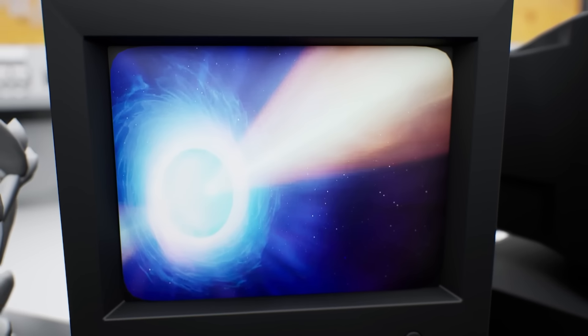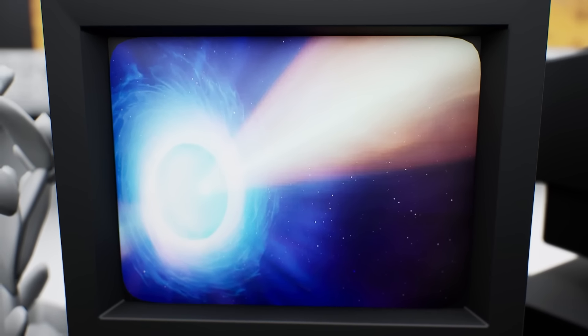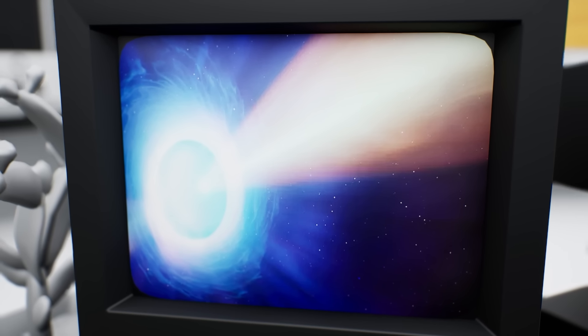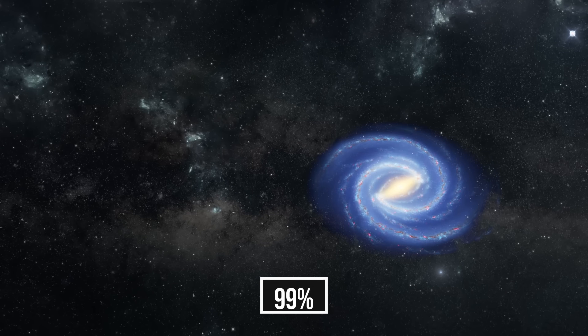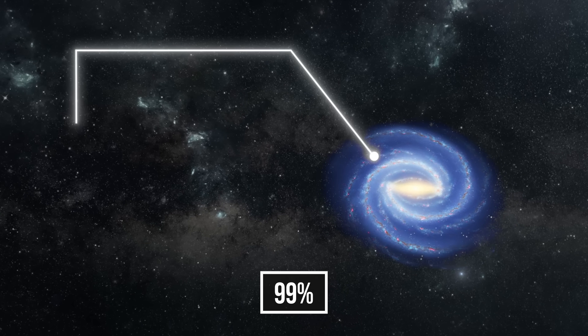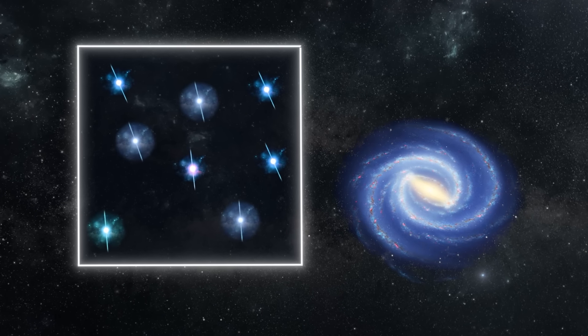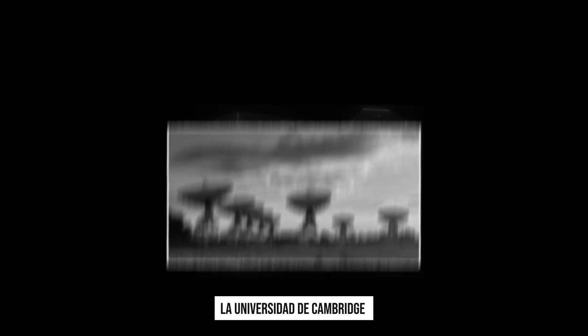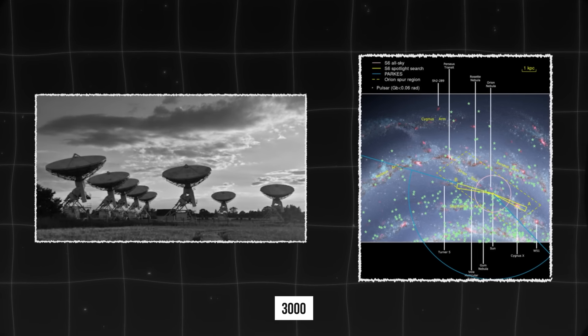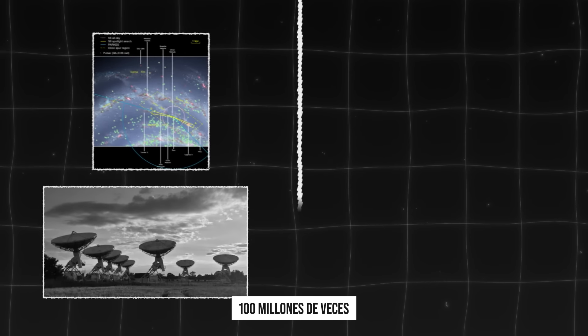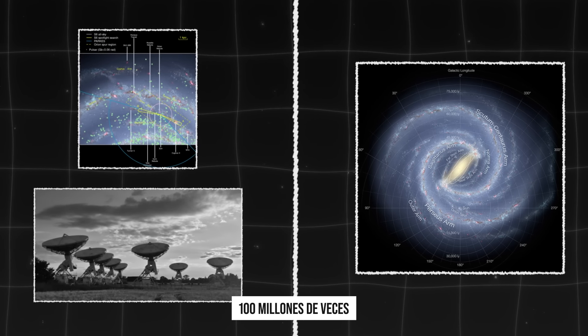Hoy sabemos que estas señales son producidas por púlsares, pequeñas estrellas de neutrones que a menudo permanecen invisibles. El 99% de los púlsares descubiertos están en nuestra galaxia. Según la Universidad de Cambridge, conocemos unos 3.000, que es 100 millones de veces menos que todas las estrellas de la Vía Láctea.